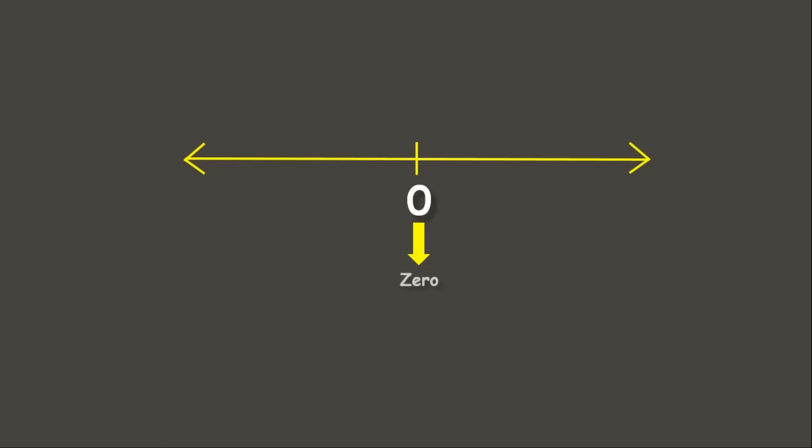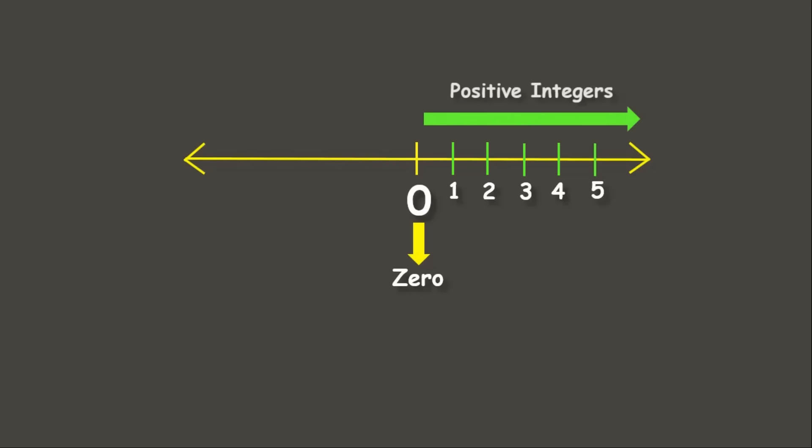Integers are whole numbers which consist of 0, positive, and negative numbers. Let's take a look at this number line. This number line is divided into right and left part by the number 0. 0 is an integer that is neither negative nor positive. The numbers on the right side of 0 are the positive integers. These positive integers can be written with or without the positive sign.